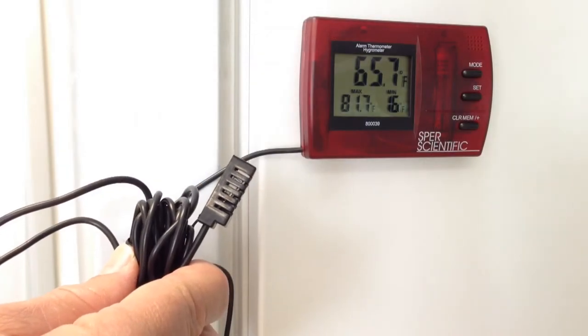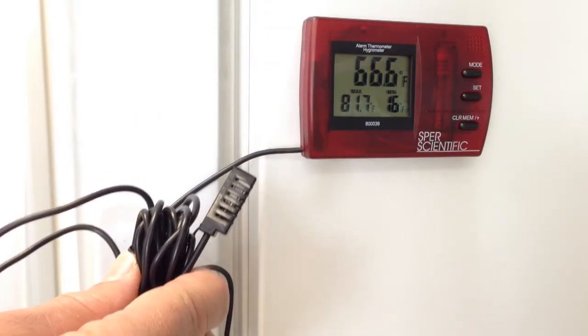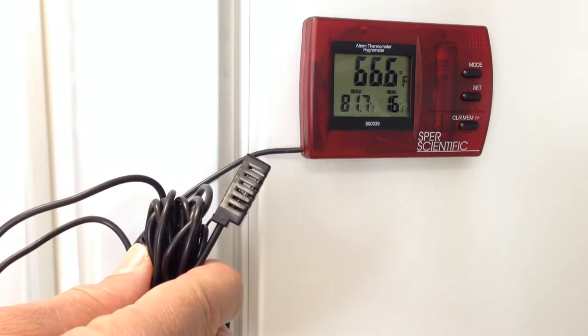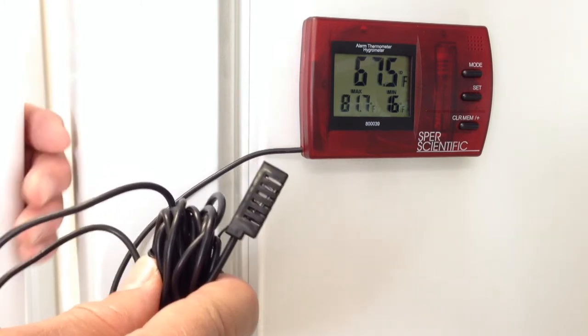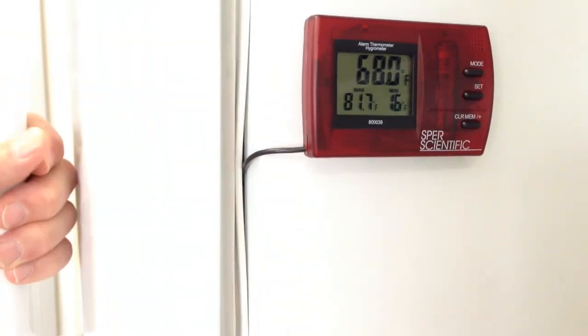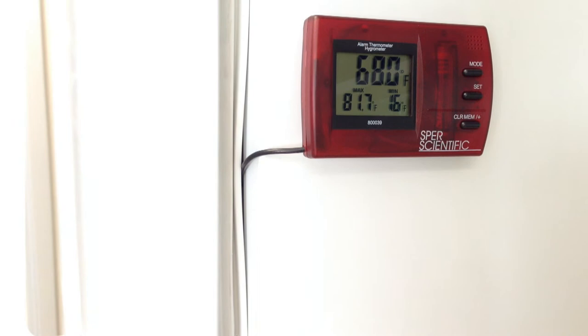Model 800-039 features a remote temperature and relative humidity sensor mounted on a seven foot cord. Place the highly accurate sensor inside a desiccator, refrigerator, drying, or other environmental chamber and view displays of temperature, RH, together with their min-max readings on the monitor outside.